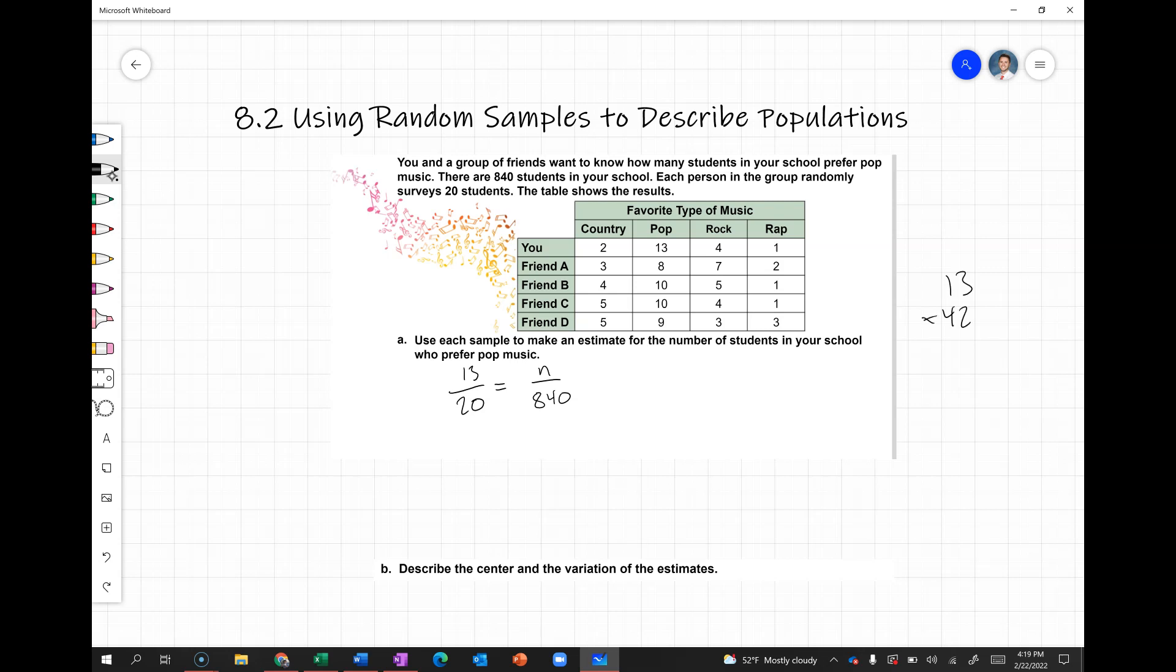13 times 42, we get 546. So for your survey, that would be 546 people who prefer pop music.